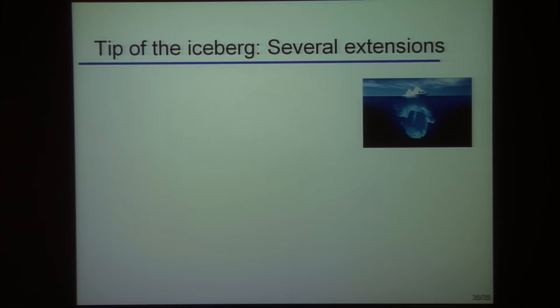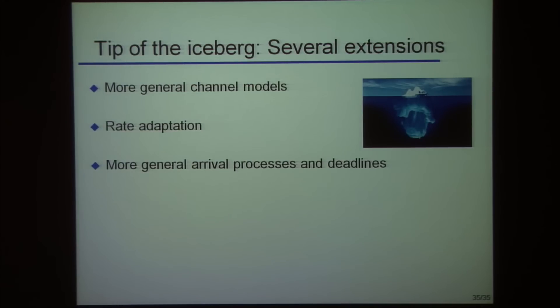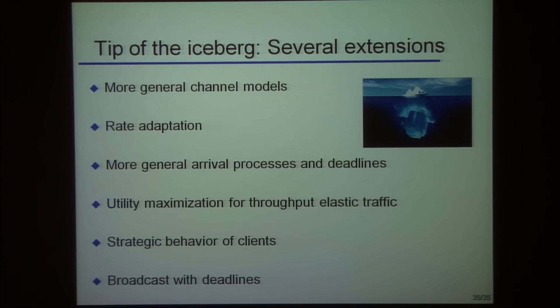I'll stop there and tell you this is just the tip of the iceberg. There's a lot that can be done here. We can talk of more general channel models, rate adaptation, more general arrival processes, deadlines. I talked about utility maximization. You can even talk of strategic behavior where clients lie saying I'm very important, and do schemes which are incentive compatible. You can also do broadcast where you're sending information to a bunch of people with deadlines. But now you cannot get acknowledgments because you get ACK explosion back. So you have to do things like network coding. All of that can be done. Thank you.